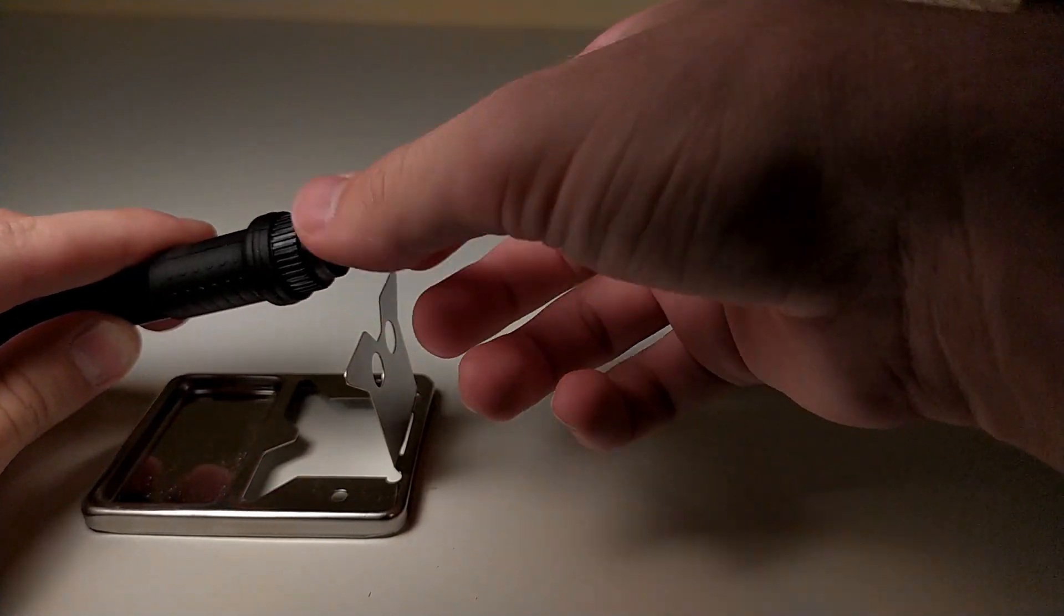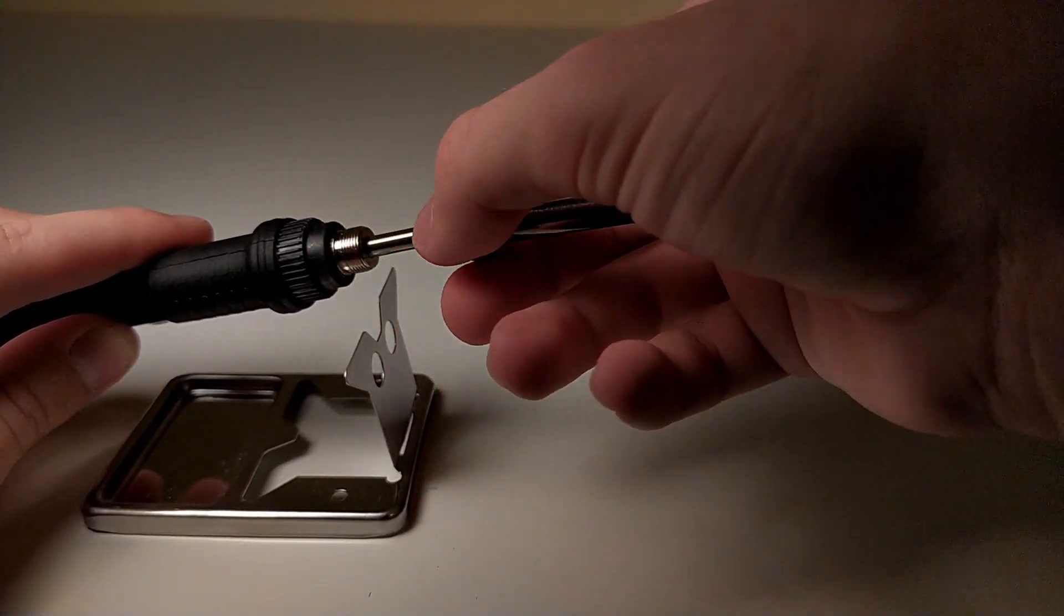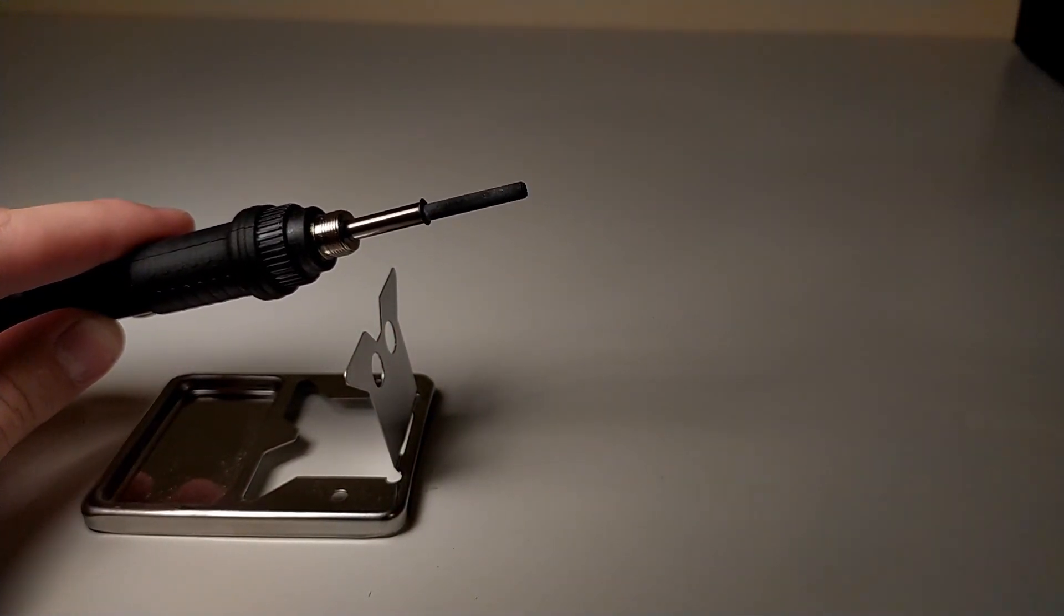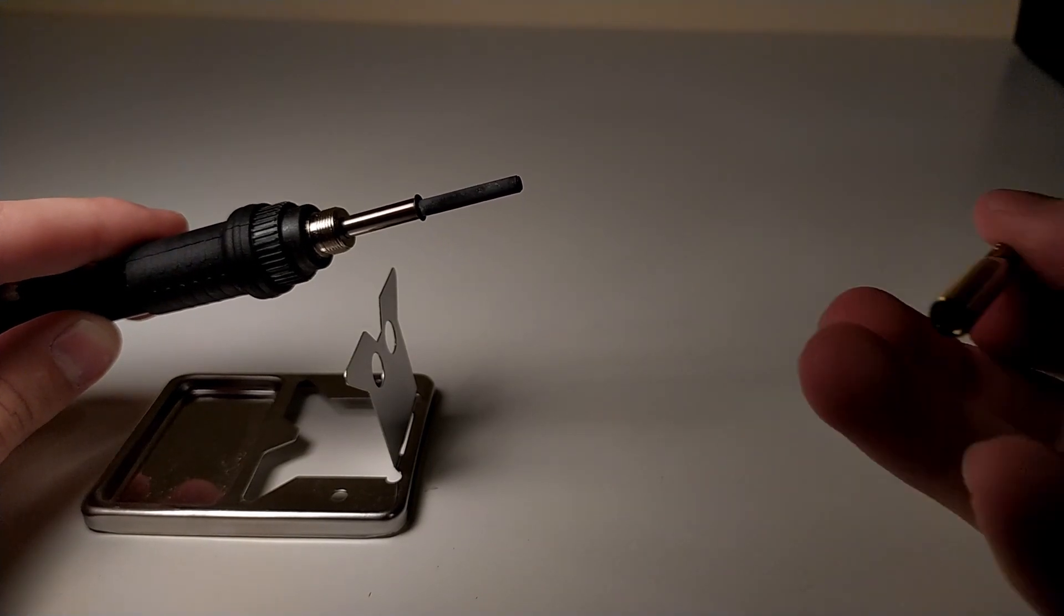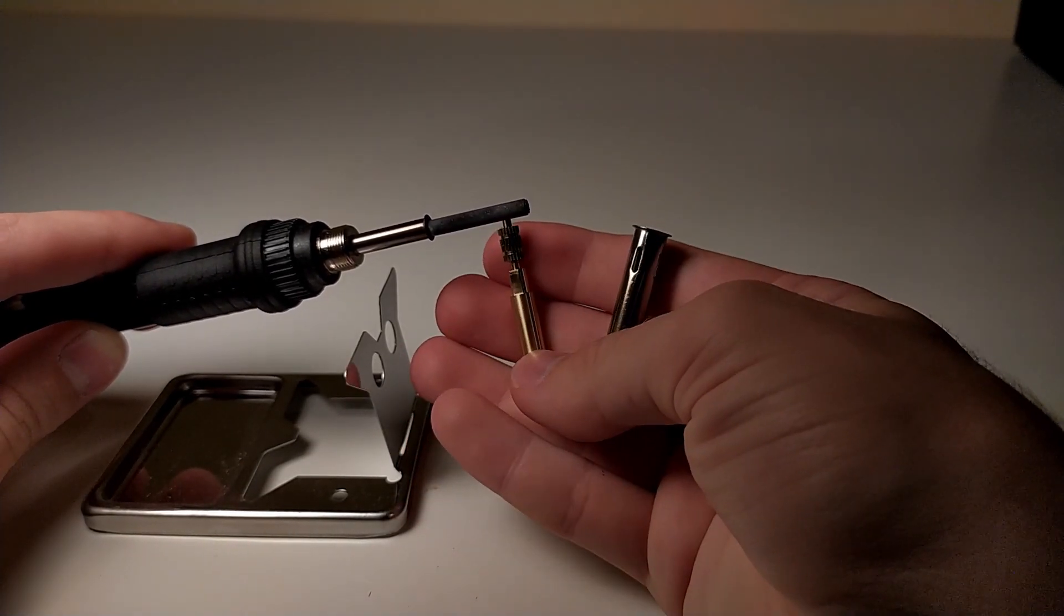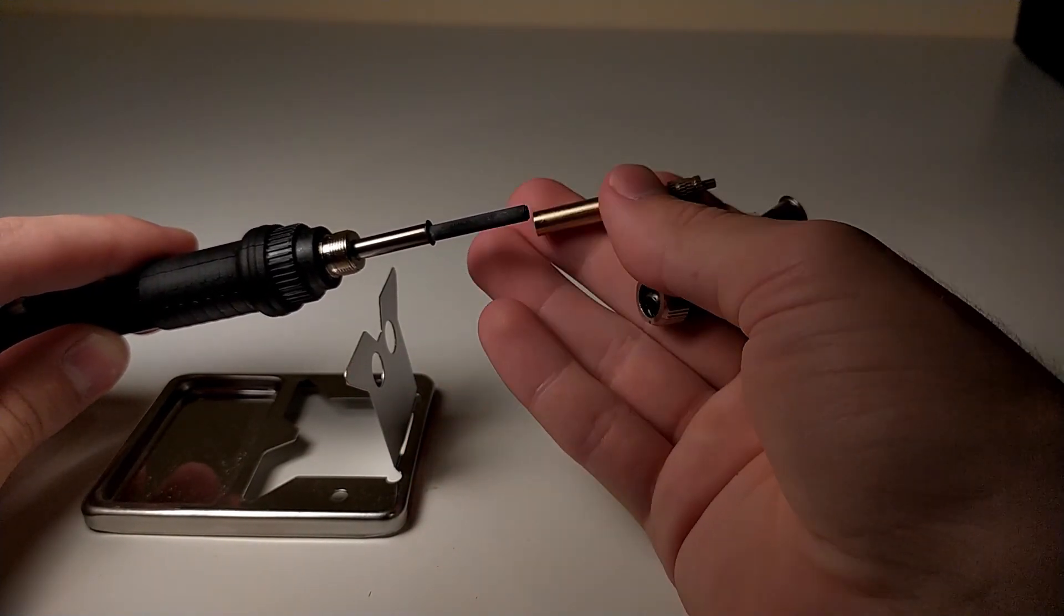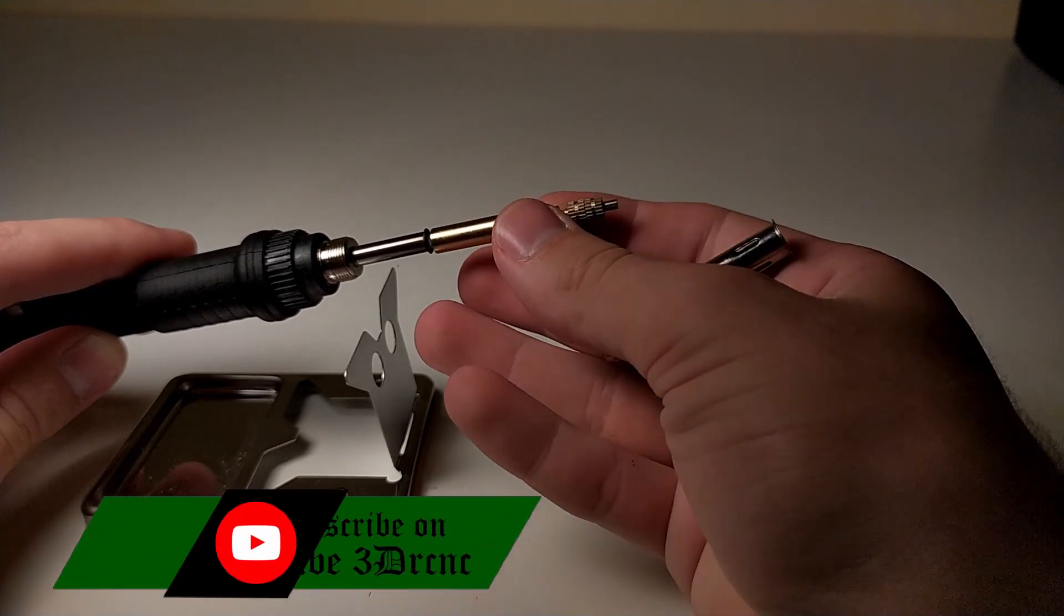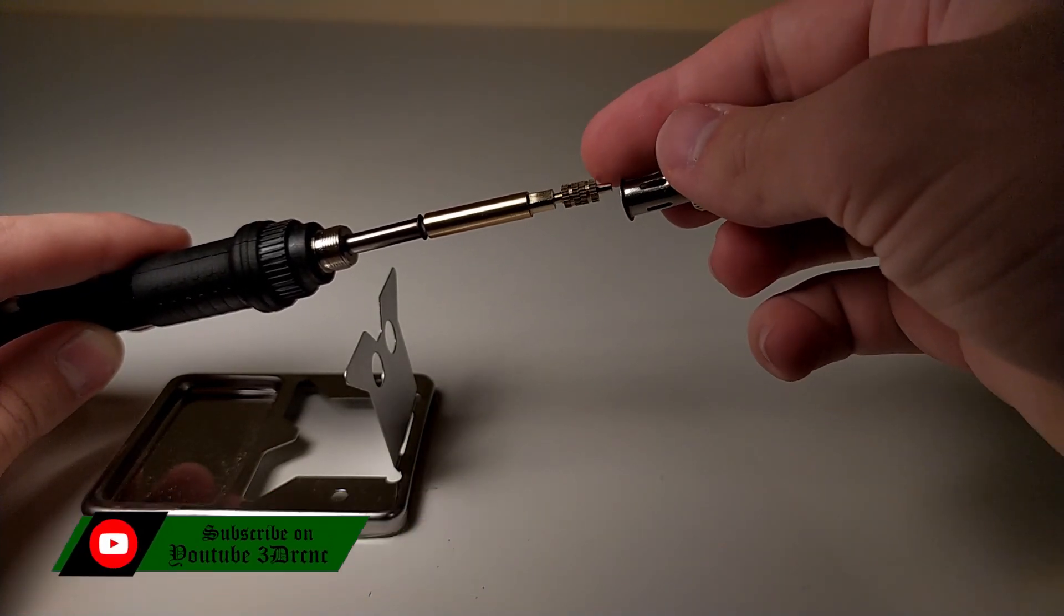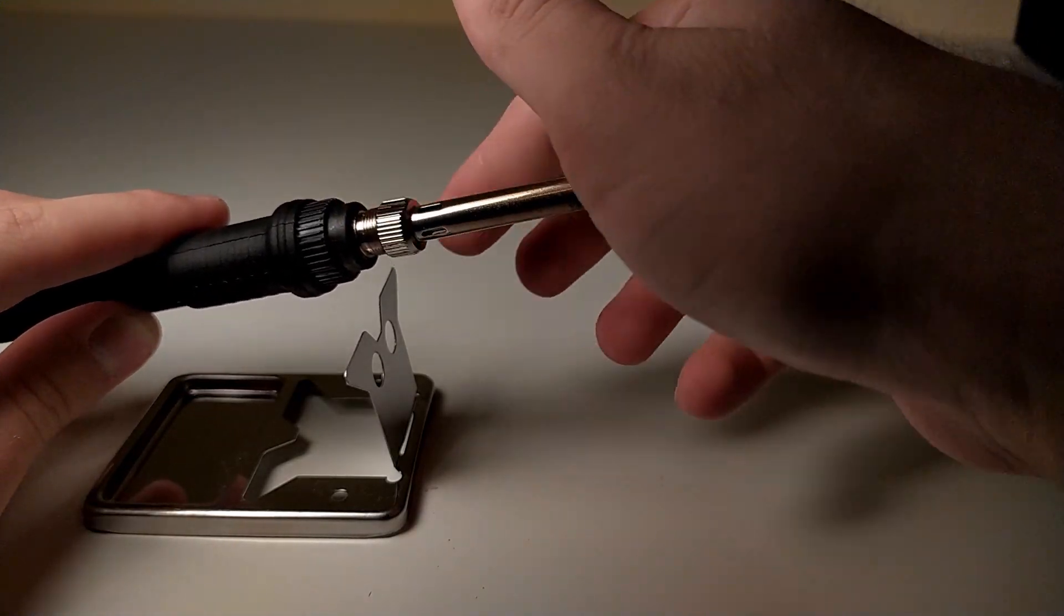The LDO VORON V0.1 kit comes with one of these heat set insert installation tools that just replace your regular tip on your soldering iron. This tool has a flat surface that the heat set goes up against and also a small pin to guide it in the center.